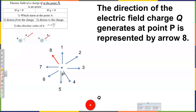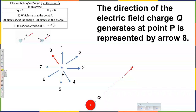And if I take a different point — let's say here — if I want to apply the same rule, I need to know what 'away' means. Well, technically, 'directly away.' The 'directly away' means you have to draw a line which connects the source — which is a charge — and the point. And then you should continue and add an arrow. That's what 'away' means.